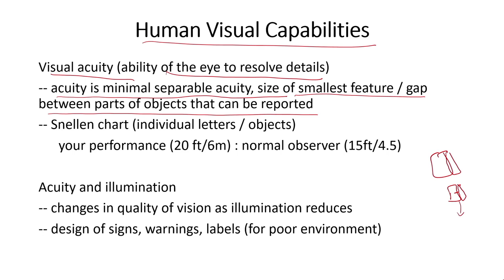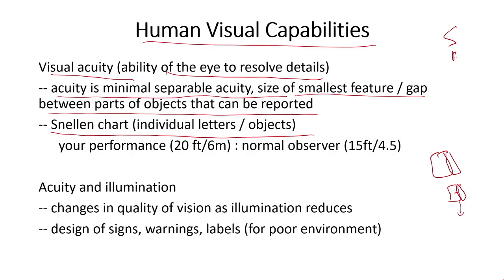Acuity is generally measured using the Snellen chart — the same chart that ophthalmologists give you, with letters written in rows of different sizes. The ophthalmologist asks you to read these lines; at some point you will not be able to distinguish between different letters in a row. From that row your visual acuity is determined. Power is measured as a ratio, such as 20/15. Here, 20 is the distance in feet at which you can differentiate objects, and 15 is the distance for a normal observer.